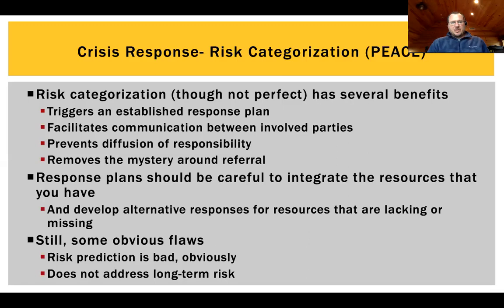The categories also trigger different referral options. Greens and yellows we can normally handle on an outpatient basis in the school setting. Orange and red, we may have to refer out to a higher level of care. It's important to make sure that if you have a categorization plan, you integrate the resources you have and fill the gaps that might exist. For example, we rely heavily on mobile crisis through Daymark, the community mental health provider, if we think someone's at a particularly high risk.